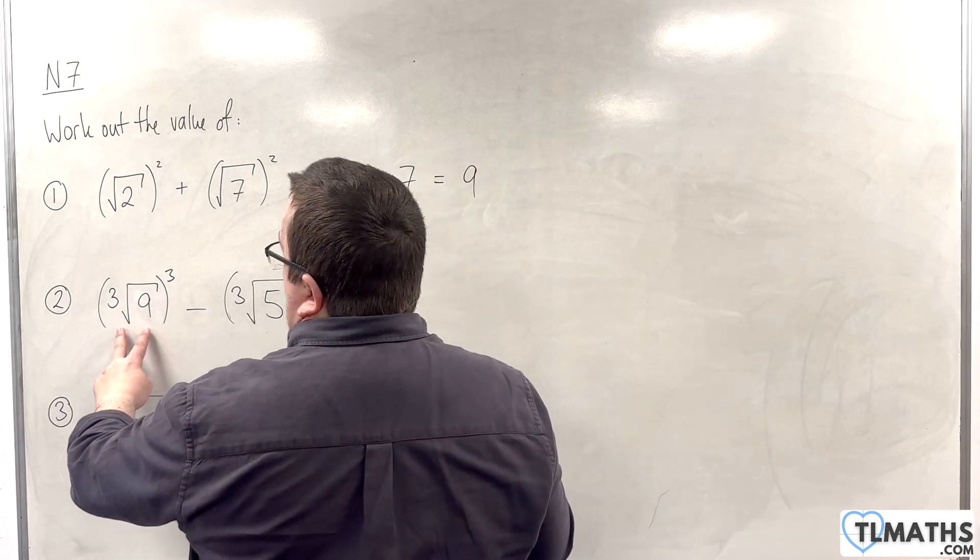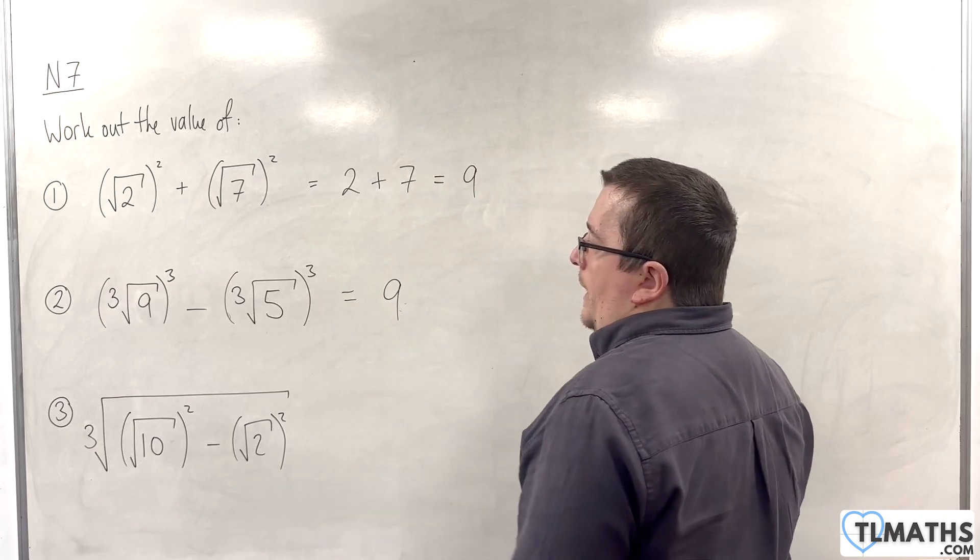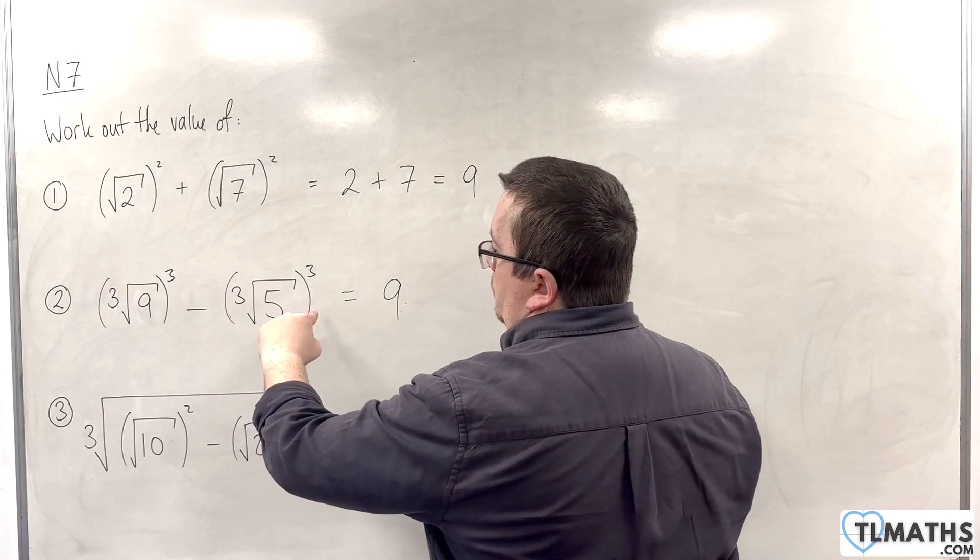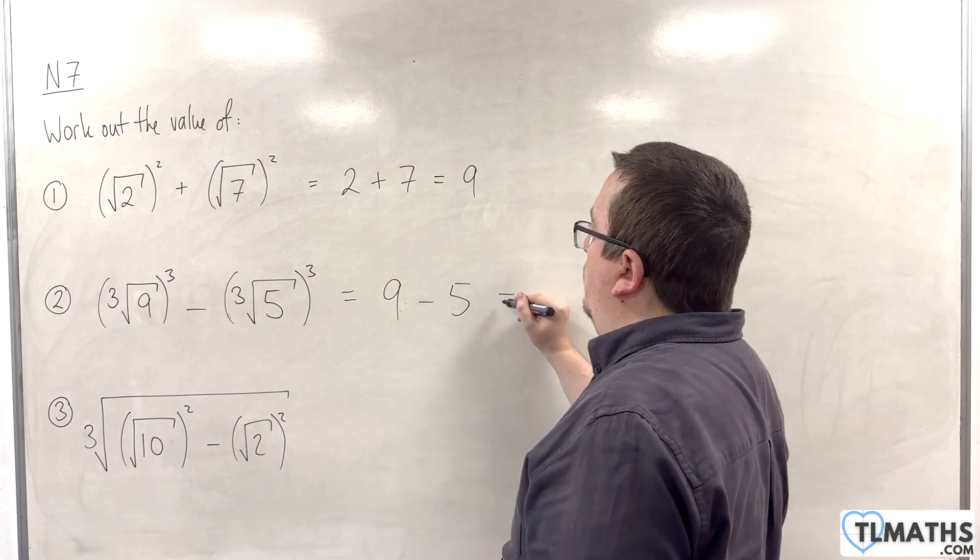So, if I cube root 9 and then cube the result, I'm going to be left with 9. And if I cube root 5 and cube the result, I'm going to be left with 5. So, 9 take away 5 is 4.